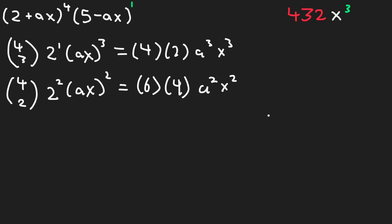Now, we need to form an equation with 432x cubed on the right side and the sum of 4 times 2 times a cubed x cubed times 5 because 5 is the constant. And we need to multiply 6 times 4 times a squared x squared by negative ax to get the x cubed. So let's make the equation 8a cubed x cubed times 5 plus 24 times a squared x squared times negative ax equals 432x cubed.